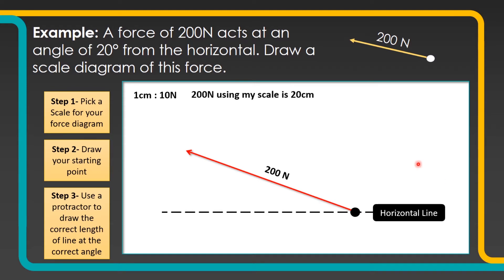You could do this on plain paper or you could use graph paper. Quite often it's easier on graph paper because the horizontal line is already drawn for you, which makes it a little bit easier to see where the straight is.